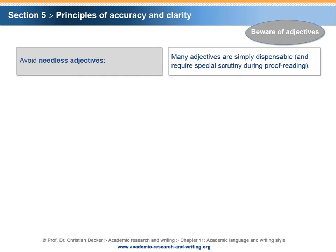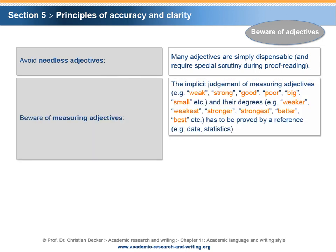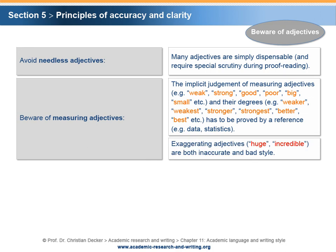An additional prerequisite for accurate and clear writing is the careful handling of adjectives. Beware of the general rule that numerous adjectives should be omitted, since they are often superfluous and do not provide additional information. Therefore, adjectives always deserve special attention during writing or proofreading. A typical source of inaccuracy are adjectives of a measuring nature. Measuring adjectives such as weak, strong, good, poor, big, small and their degrees — weaker, strongest, better, best — are vague. They imply a judgment that has to be proved by adding a reference. Exaggerating adjectives and expressions such as 'huge,' 'incredible,' etc. are not only vague but also considered poor style in academic writing.